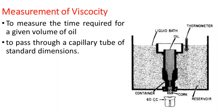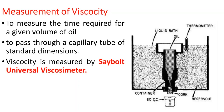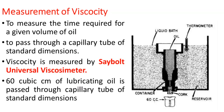Viscosity measurement is done with the help of the Saybolt viscosity meter, as shown in the diagram. In this meter, 60 cubic centimeters of lubricating oil is passed through a capillary tube of standard dimensions. At the bottom there is a flask which collects the 60 cc of lubricating oil once it has passed through the capillary tube.